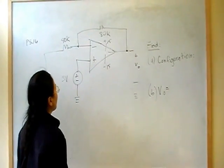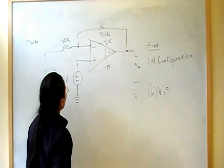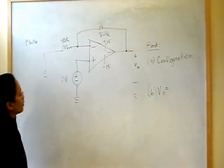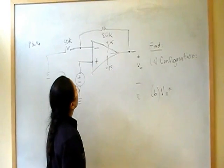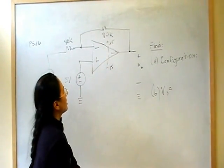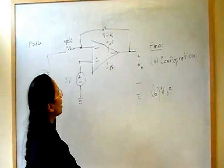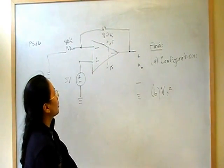And attached to the positive terminal of your op amp is a 3-volt signal source. Now, actually, the plus and minus 15 is not going to come into play in this problem because they're not asking us to find saturation, so it doesn't even matter what that is.